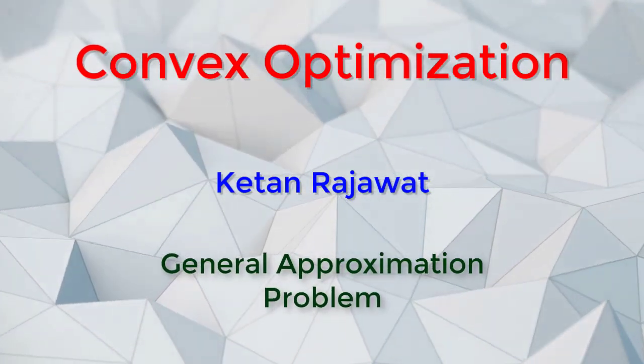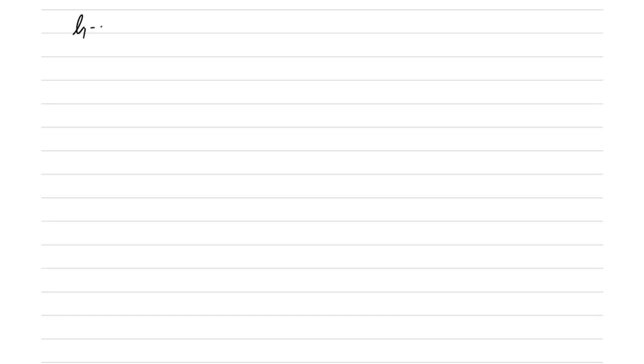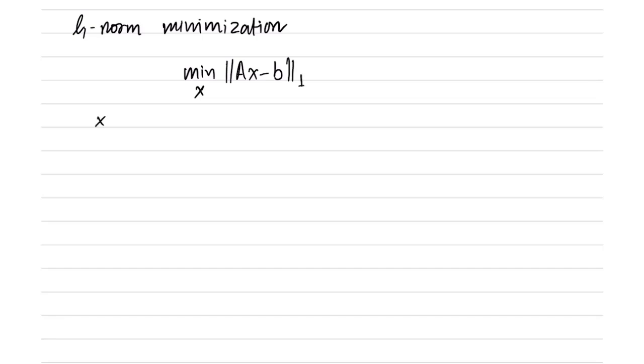Let us look at L1 and L infinity norm minimization. We have already seen the least squares problem where the goal was to minimize the L2 norm square of Ax minus b. The problem can be generalized and we can look, for example, at the L1 norm minimization, which would be written as min over x of the L1 norm of Ax minus b. Note that x is in R^n and A is in R^(m×n).